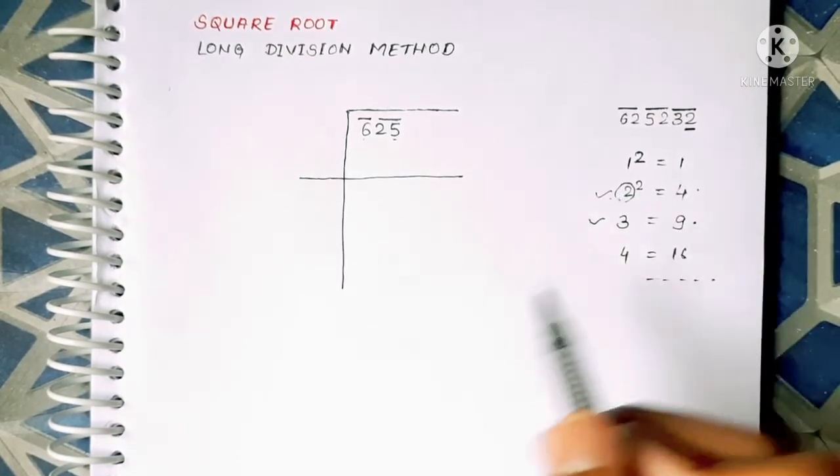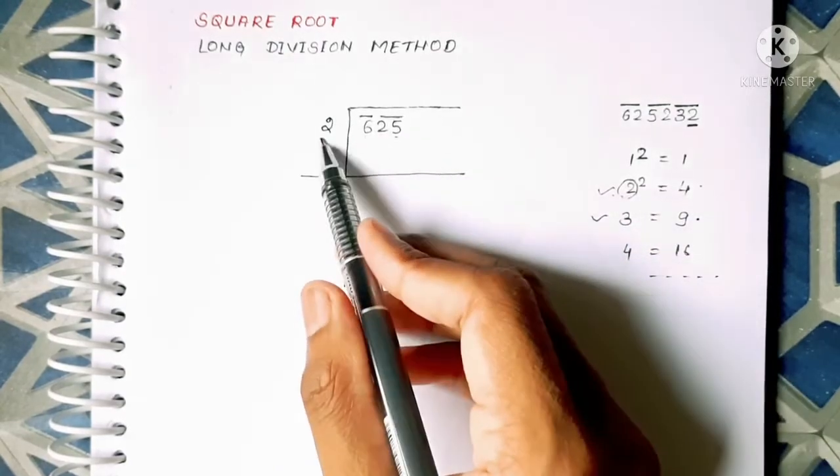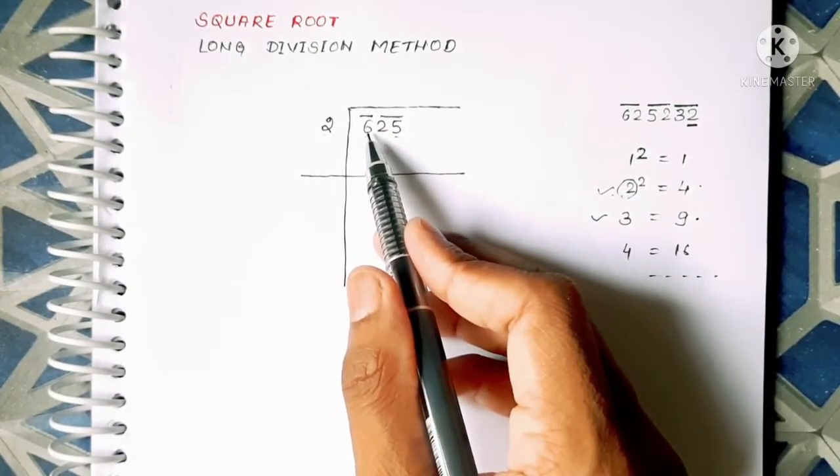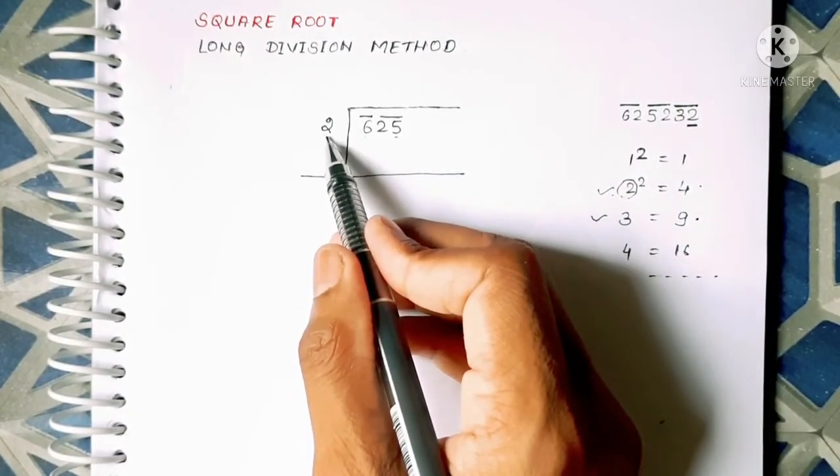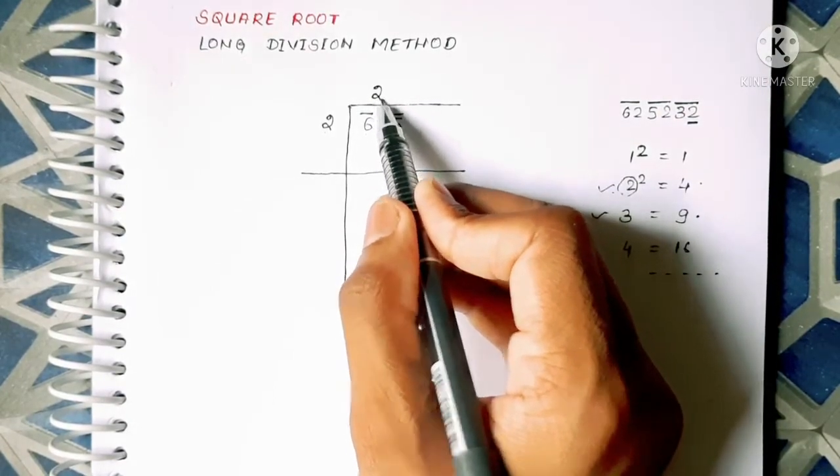So we will put the number 2 here since 2² equals 4 and it is the less number than 6. So we will have to put it here, one and the other in the quotient. Here this is the quotient as 2.